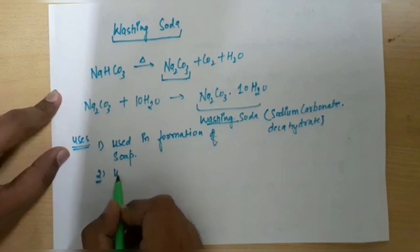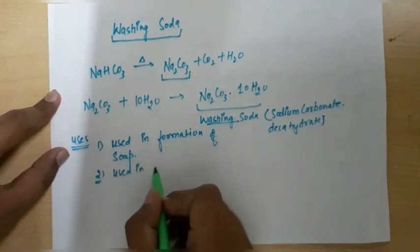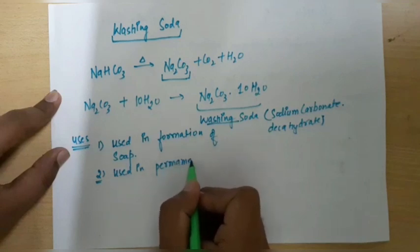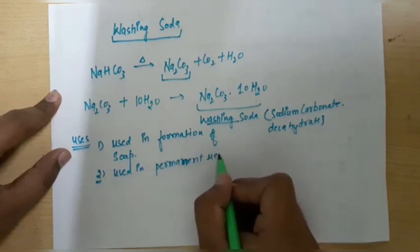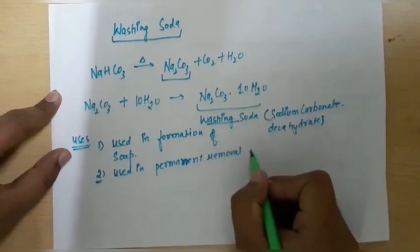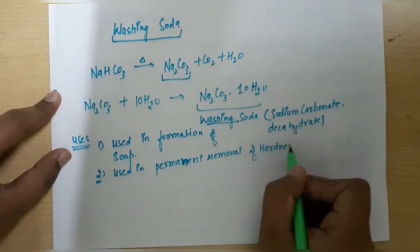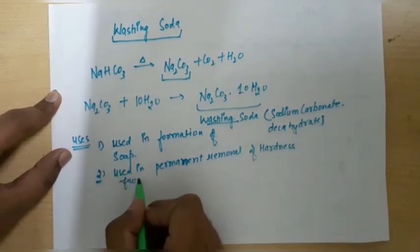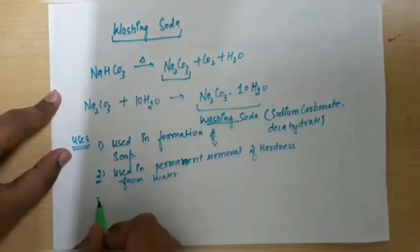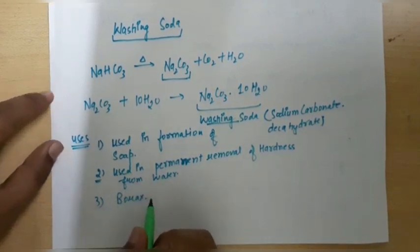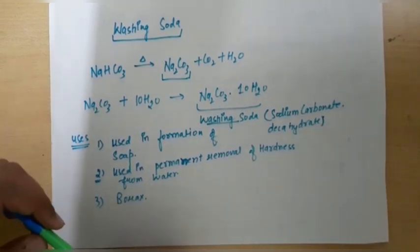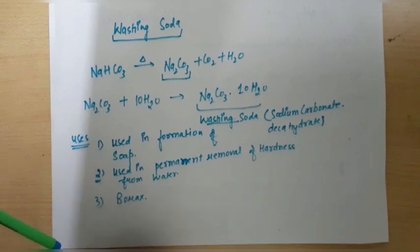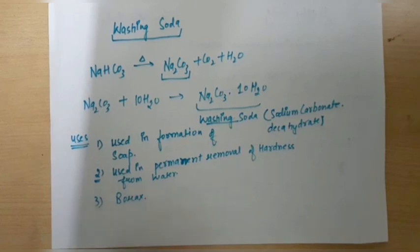And the second one is it is used in permanent removal. It is also used in various industries for the formation of borax. So these two topics have been completed, baking soda and washing soda. Next, that is gypsum, plaster of paris, and copper sulphate crystals we will be doing in the next class.